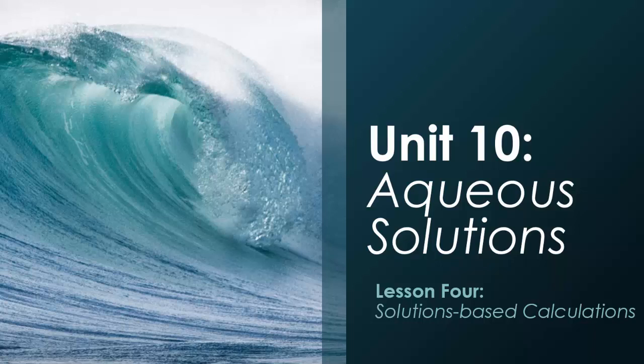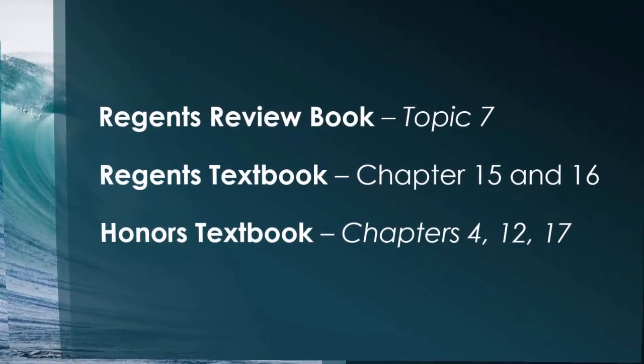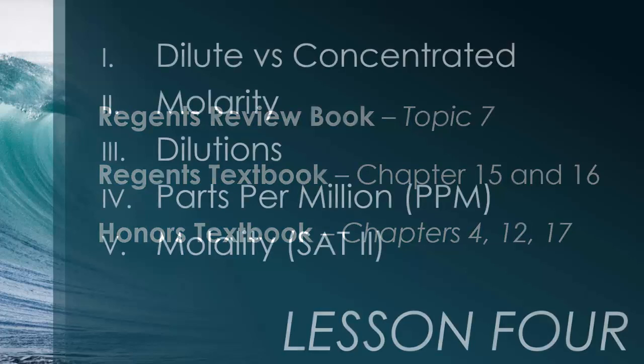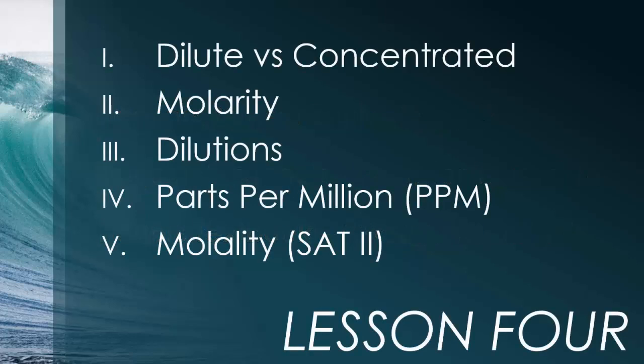Welcome back to Unit 10. We're going to be talking about different types of mathematical solution calculations today. All the fun stuff. Lots of math, so make sure you have your reference tables and please make sure you have the calculator out. We'll be talking about the differences between dilute and concentrated, molarity, dilutions, parts per million, and for the SAT kids, we'll be talking about molality. Yeah, sounds like molarity. Very similar, guys. That's going to be a little tongue twister.